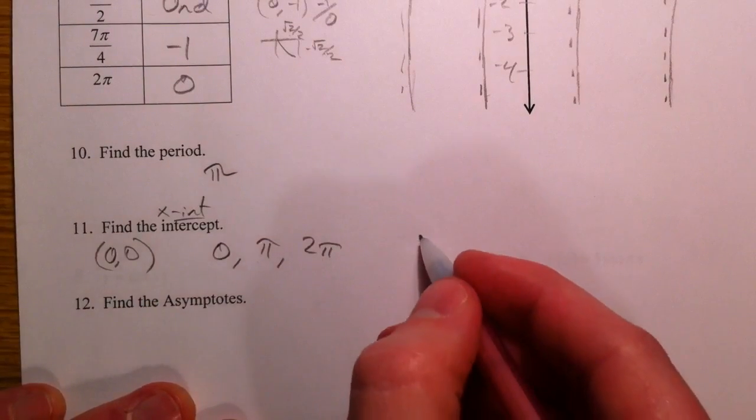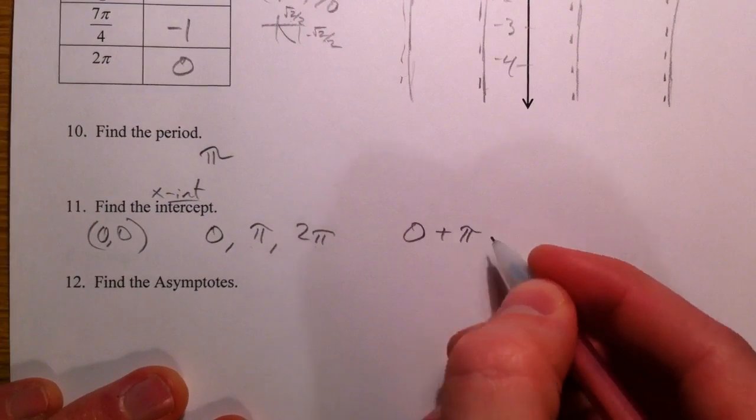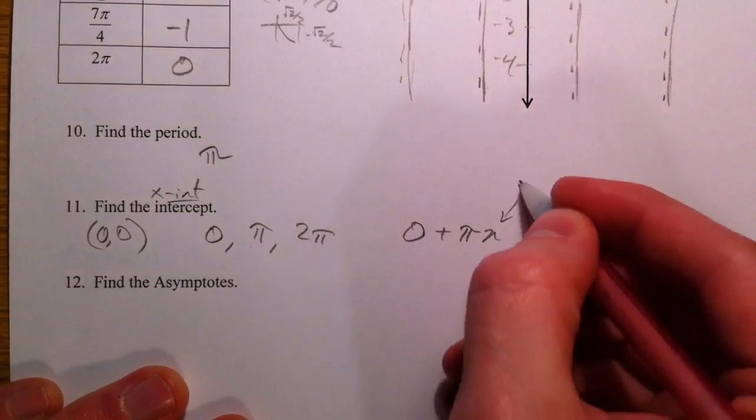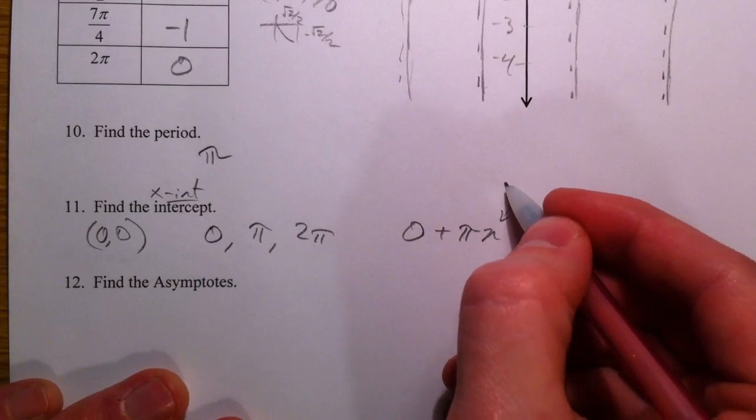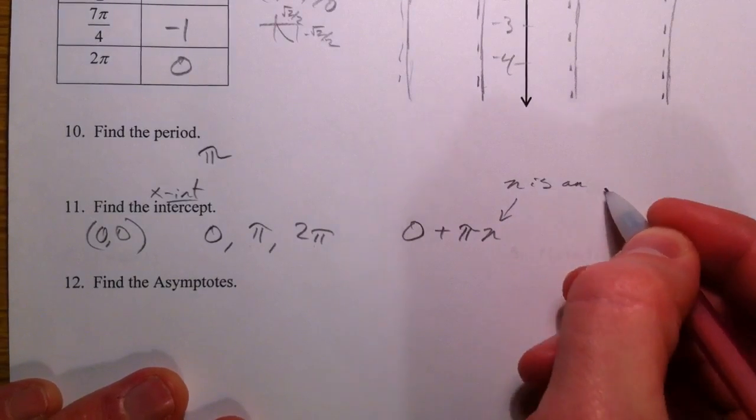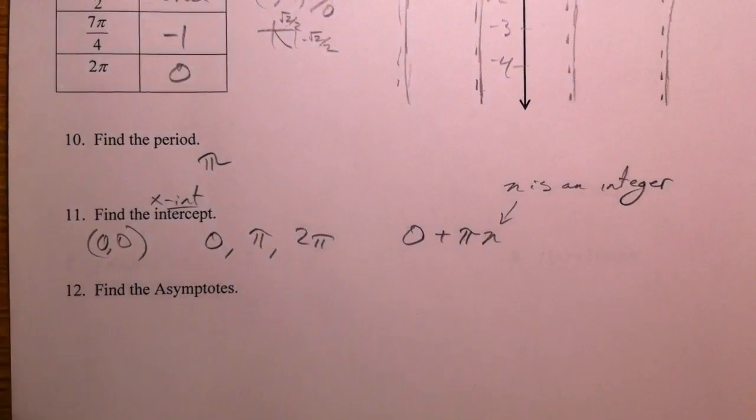0, pi, 2pi. Or in general terms, you could say 0 plus pi times n, where n is an integer.